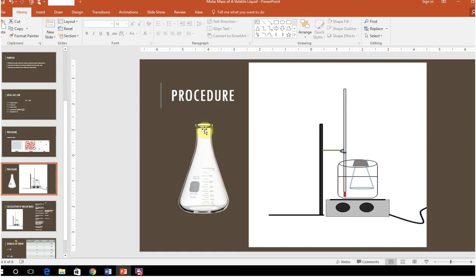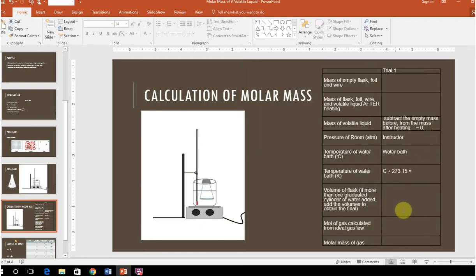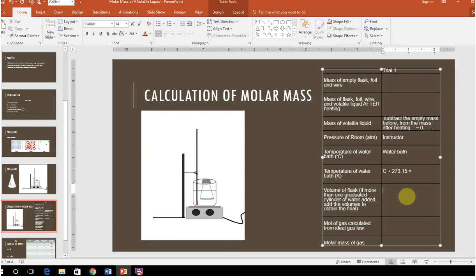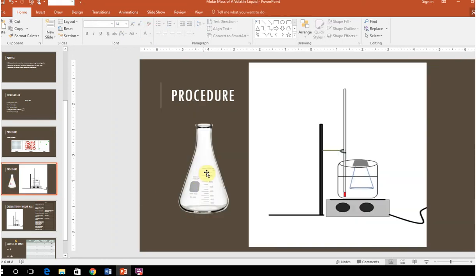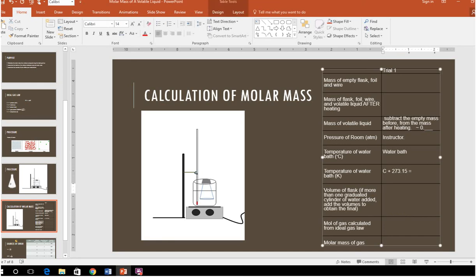So what you guys are going to do to really make sure you know the volume of this flask is you're going to fill it all the way with water, all the way to the top, because that's how much the vapor would occupy. And this is only once everything else is done. And you're going to pour that water into a graduated cylinder. Now, you get a 100 ml graduated cylinder. This is a 125 ml flask. So you're going to have to do it more than once.